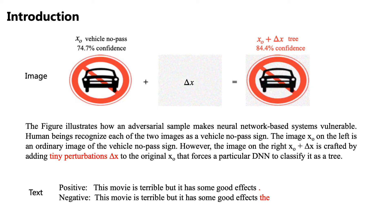Introduction. The figure illustrates how an adversarial sample makes neural network-based systems vulnerable. Human beings recognize each of the two images as a vehicle no-pass sign. The image on the left is an ordinary image of the vehicle no-pass sign. However, the image on the right is crafted by adding tiny perturbations to the original that forces a particular DNN to classify it as a tree. In text scenarios, we change a punctuation in a positive sentence and deep models misclassify it as negative. These misclassified samples are called adversarial samples.